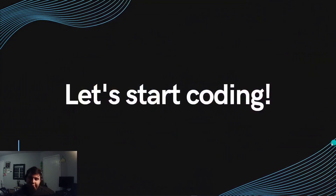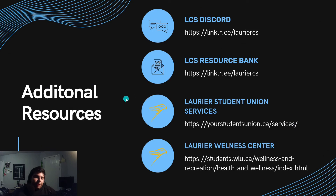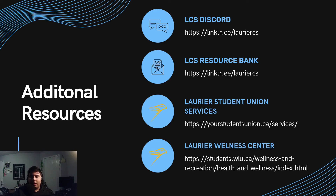That's basically everything for the web portfolio part. If anyone has questions, throw them in the chat. For additional resources: our link tree has all our links including event sign-ins; our resource bank on GitHub will be released in a couple days with expanded resources on coding, mental health, and more. The Laurier Student Union also has a bunch of services available to students.